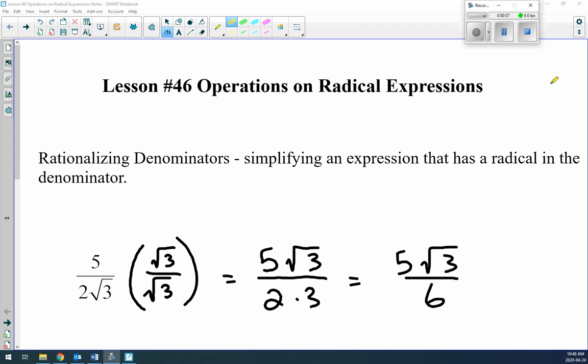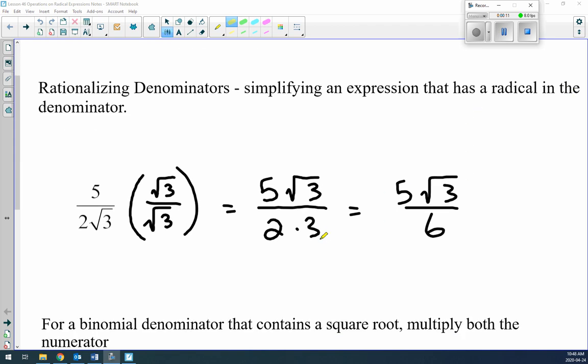At the end of the last lesson, we talked about never leaving the denominator as a radical. It's called rationalizing the denominator. Basically, you want to simplify an expression that has a radical in the denominator, and you're trying to get rid of it.